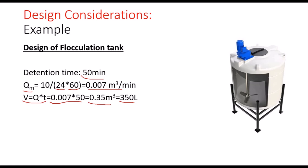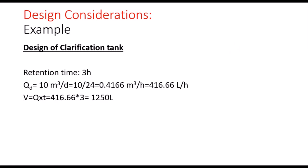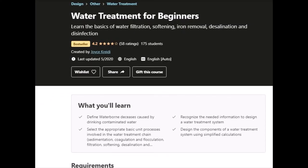This is concerning the flocculation tank. Now concerning the design of the clarification tank, which is the sedimentation tank, the retention time we have chosen is three hours. So Q is 10 cubic meters per day divided by 24, which is 0.42 cubic meters per hour or 416 liters per hour. And also here we have to use the formula Q times t for the volume, 416.36 times 3. So the volume of the clarification tank will be 1250 liters.